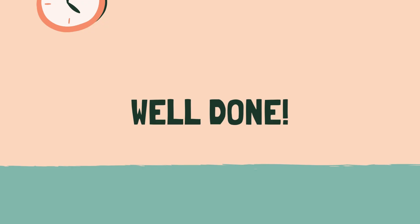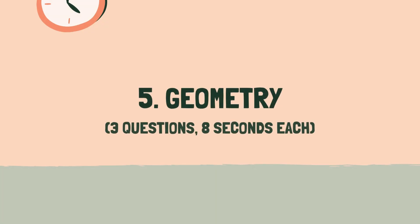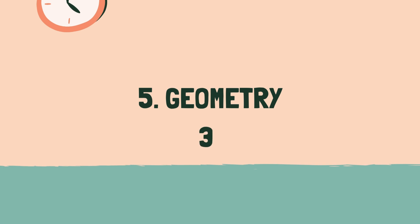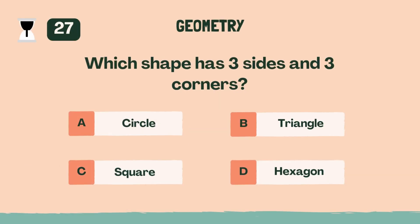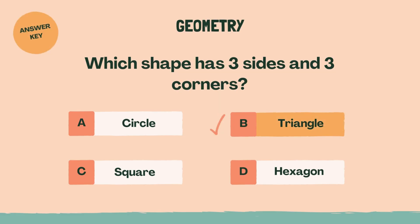Well done. Let's move on to the next category. Category 5: Geometry. 3, 2, 1, go. Which shape has 3 sides and 3 corners? B, Triangle.